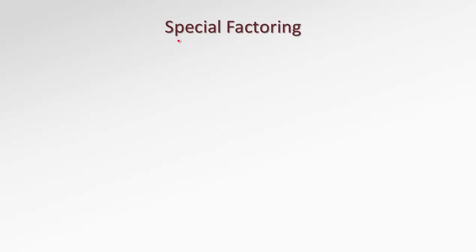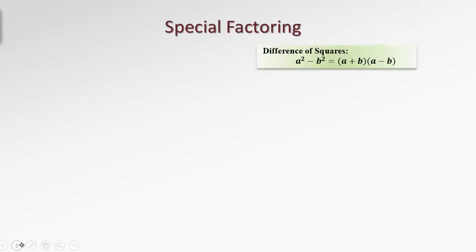In this video we'll look at special factoring. There are several formulas that may help us to factor. The first one, and probably the easiest one, is the difference of squares. Remember when we multiply two conjugate brackets with the same terms but opposite signs, the product becomes the difference of the first term squared and the last term squared. Now we are going to use this formula the other way around. As soon as we recognize the difference of squares pattern, we are going to factor it into two conjugate brackets.